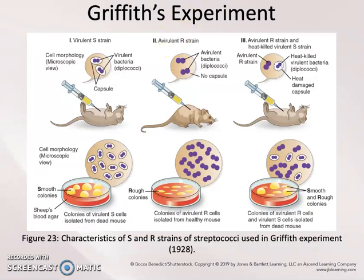Interestingly, Frederick Griffith discovered that when a dead S strain were mixed with a living R strain and injected into an animal, the animal would also die. He then extracted the bacteria in that dead animal and found that the bacteria that caused the infection was, in fact, a living S strain.